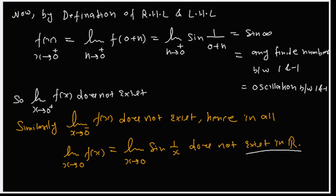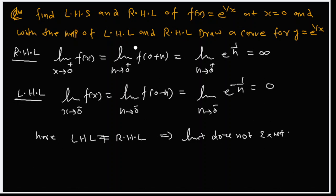Now we have the function f(x) equal to e to the power 1/x. Let's check it and draw the graph. We find the left-hand limit and right-hand limit of f(x) = e^(1/x) at x equal to 0. First, we find the right-hand limit: limit as x tends to 0 from the positive side equals limit as h tends to 0 of e^(1/h), which is e to the power infinity — that is infinity.